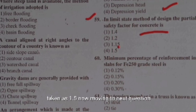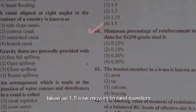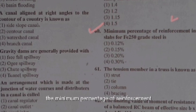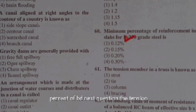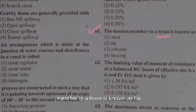In the limit state method of design, the partial safety factor for concrete is taken as 1.5. The minimum percentage of reinforcement required in a slab for Fe 250 steel is 0.15% and for HYSD steel it is 0.12% of bd. The tension member in a truss is known as a tie and the compression member is called a strut.